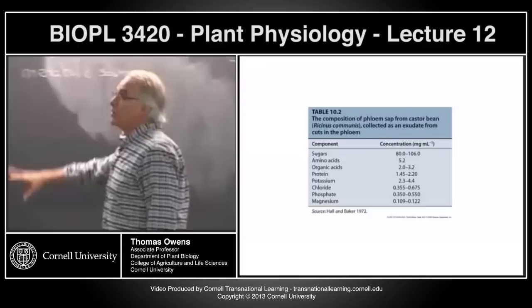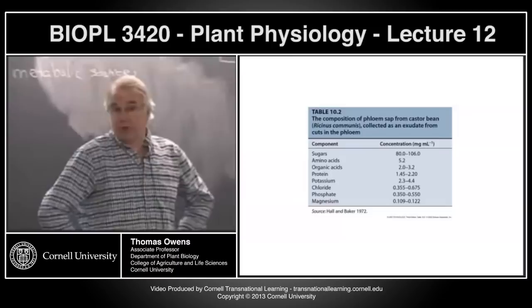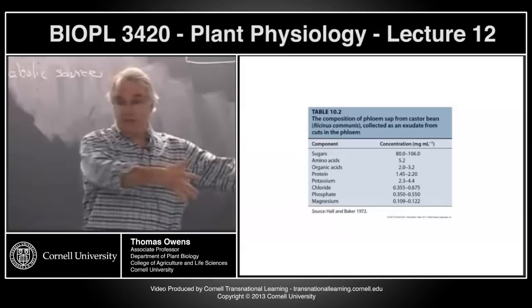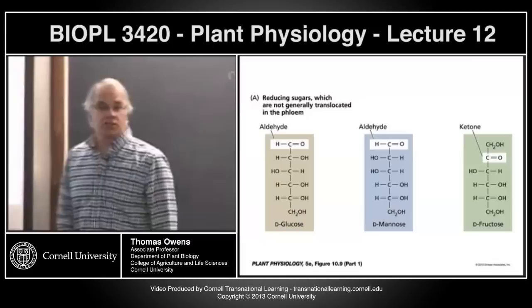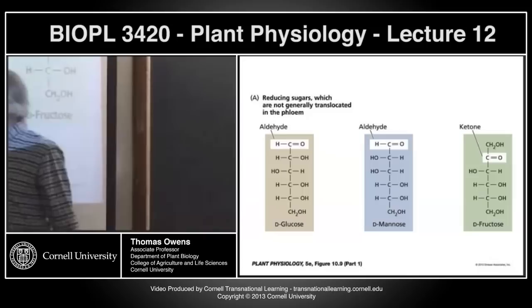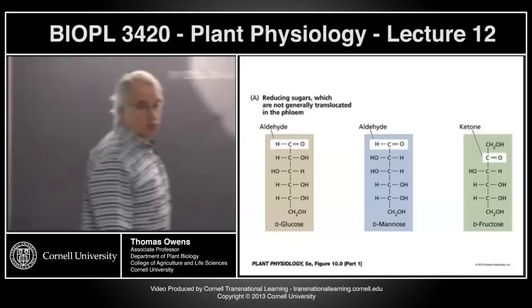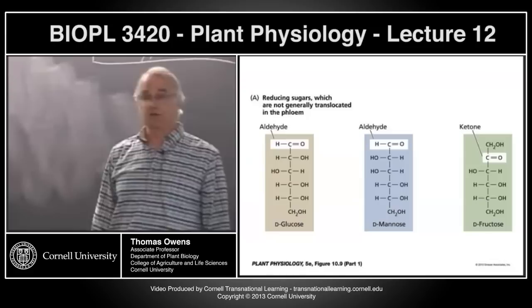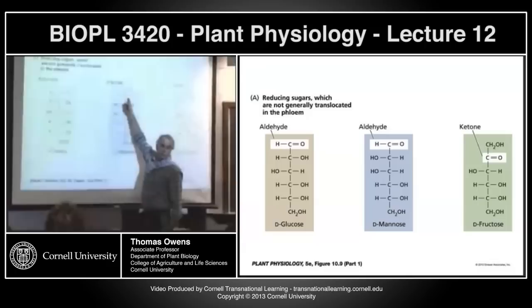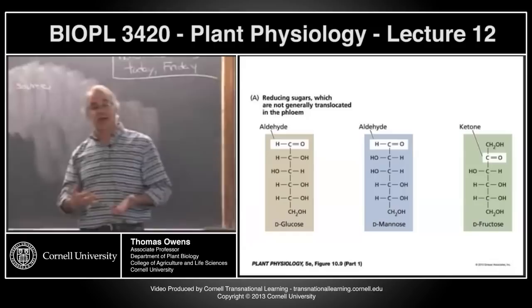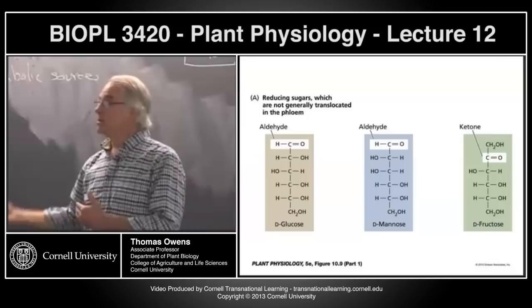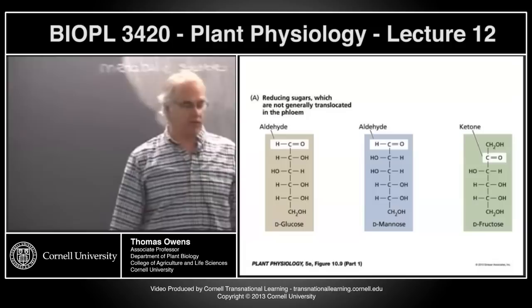The sugar composition of the phloem is very species-specific. One set of species will transport one kind of sugar and another set will transport other kinds. The sugars that are not transported are the ones we normally think about — glucose, fructose, or mannose. These monosaccharides are not transported because they have a free aldehyde group, making them more reactive. There's a greater chance they'll undergo some undesirable reaction over the course of transport from source to sink.